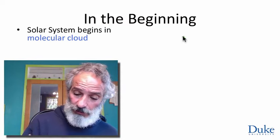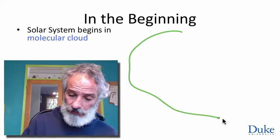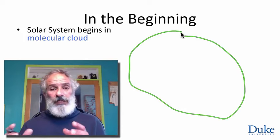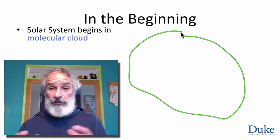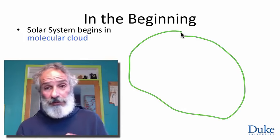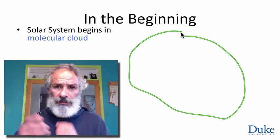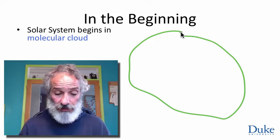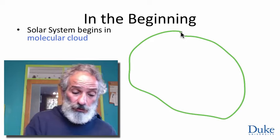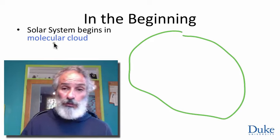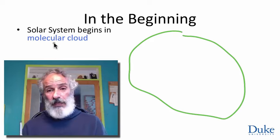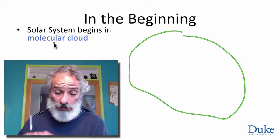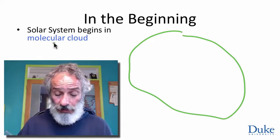What's a molecular cloud? It's a great big collection of mostly hydrogen with some contamination — traces of other elements. It's called molecular if it's cool enough that hydrogen atoms actually form stable bonds and we have hydrogen molecules in it.